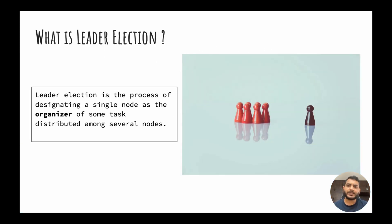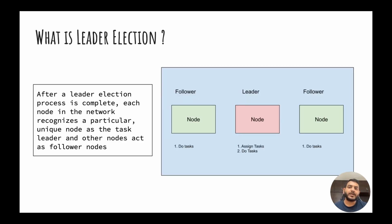So what is leader election? Leader election is a process using which we want to identify one node in our distributed system as a leader node, and that leader node will be responsible for some extra responsibilities. After the leader election process has completed, we should be able to identify one node in our system as a leader node. All the nodes should be aware of that particular leader node, and all other nodes will assume themselves as a follower node.